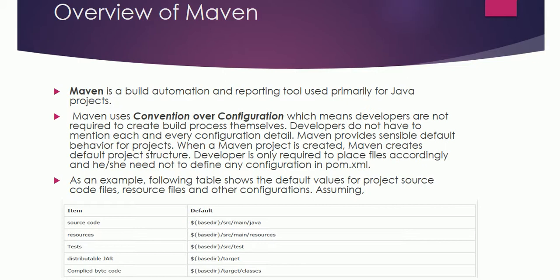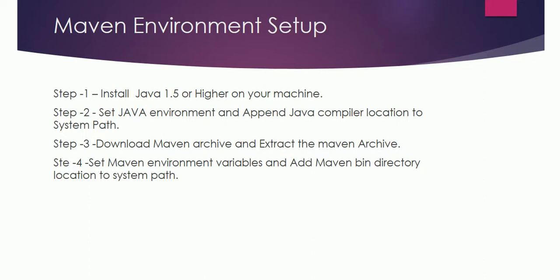The main benefit of Maven is that if a new team member joins a project, they do not need to worry about the project structure, because Maven maintains a standard folder structure. For example, source code goes under /src/main/java, resources go under /src/main/resources, test code goes under /src/test, and the jar or war file produced by the build is placed under /target. This standardized folder structure is a key advantage over other build tools.